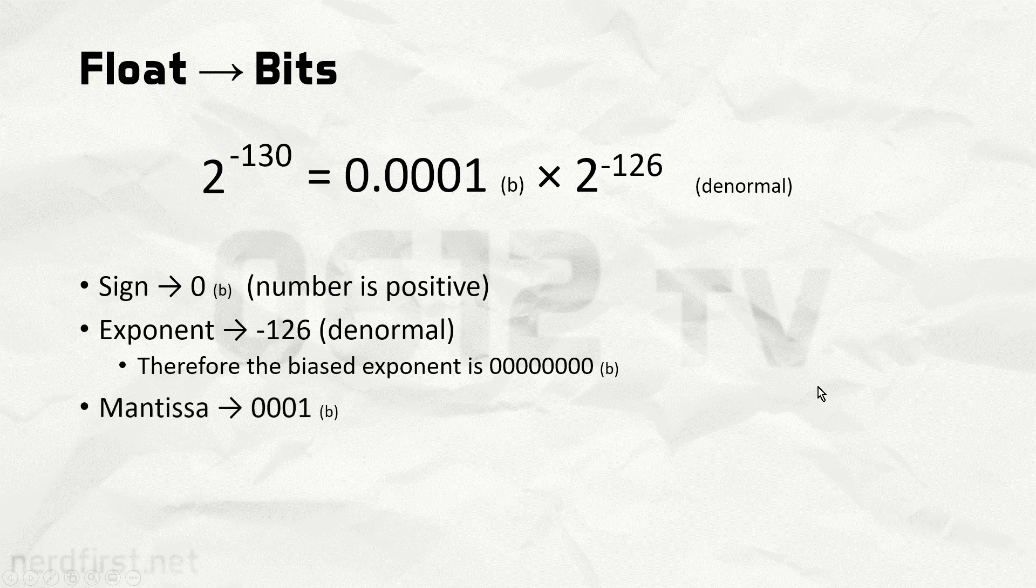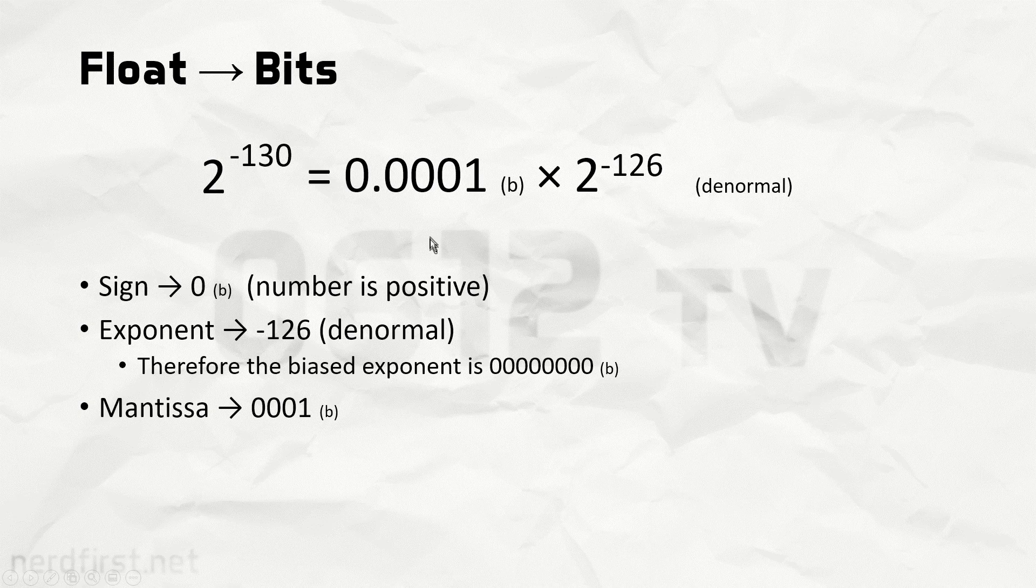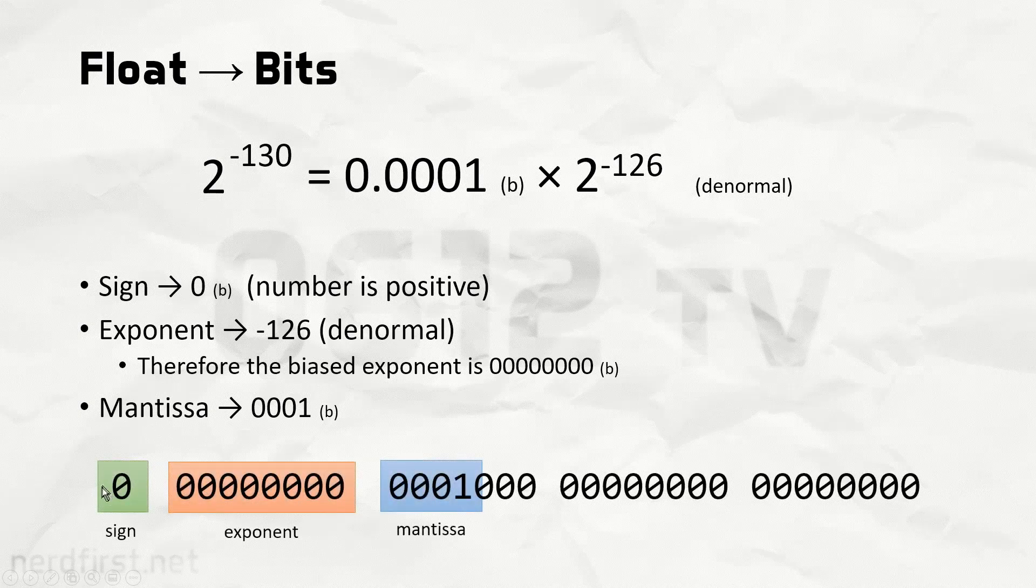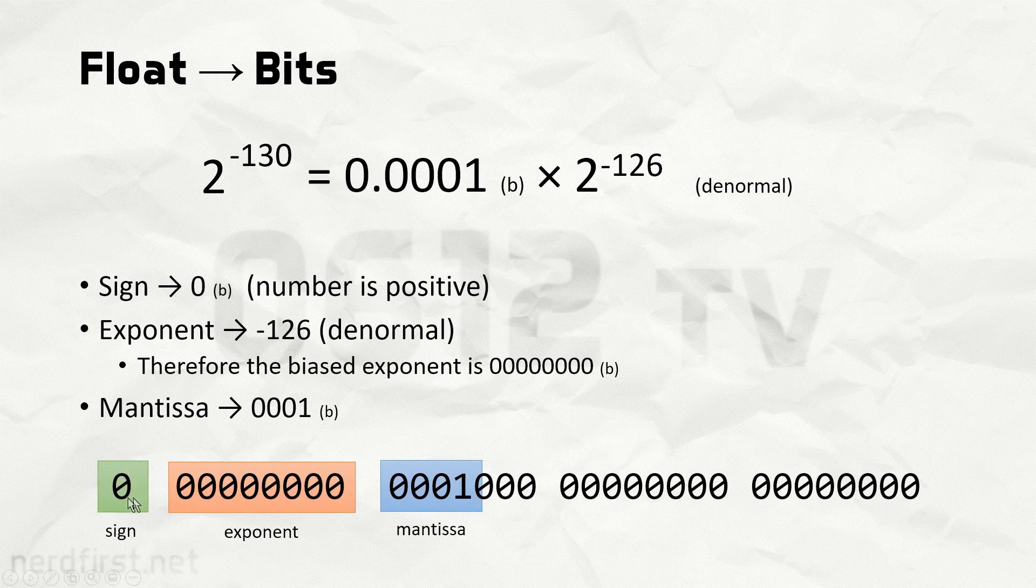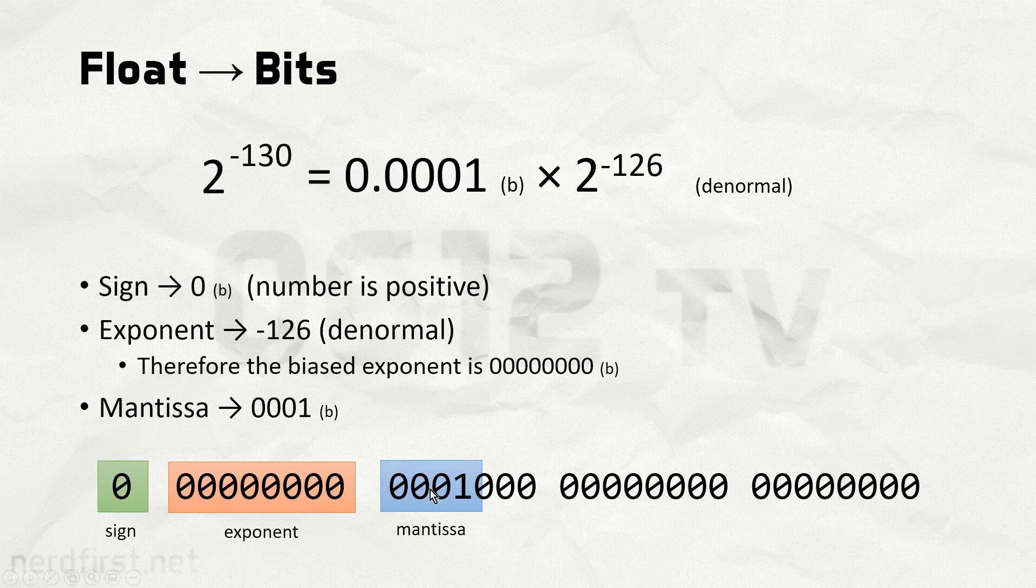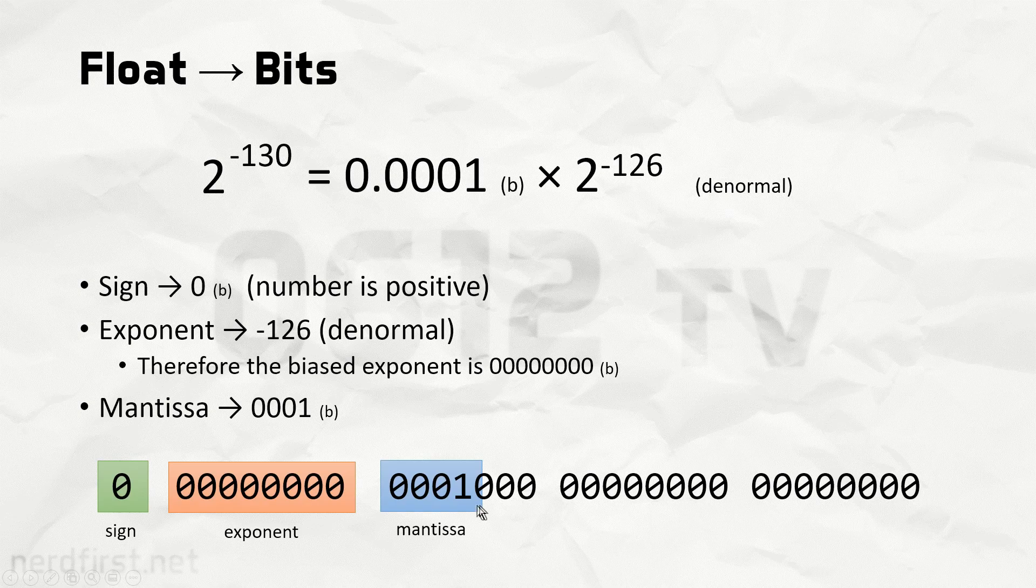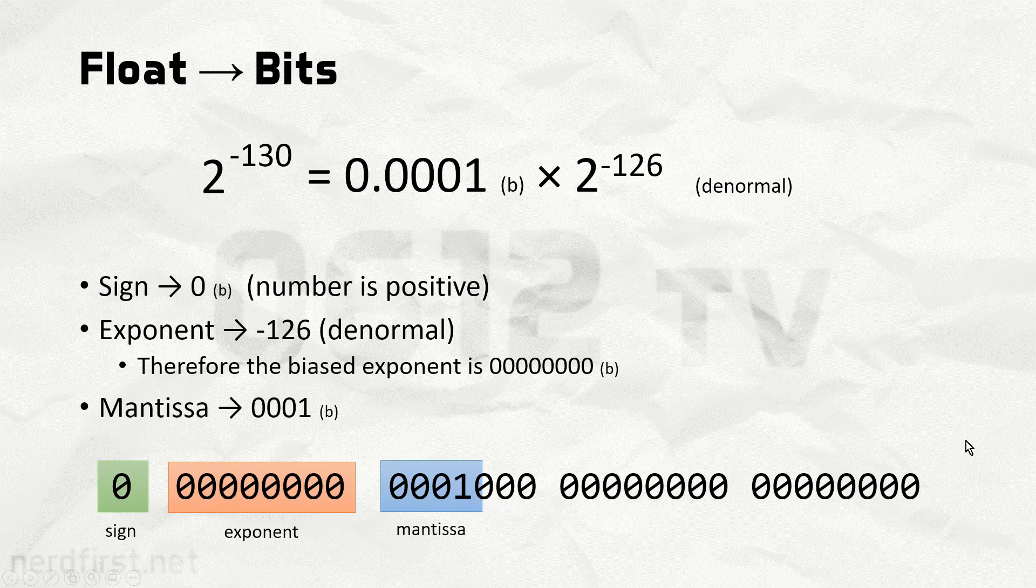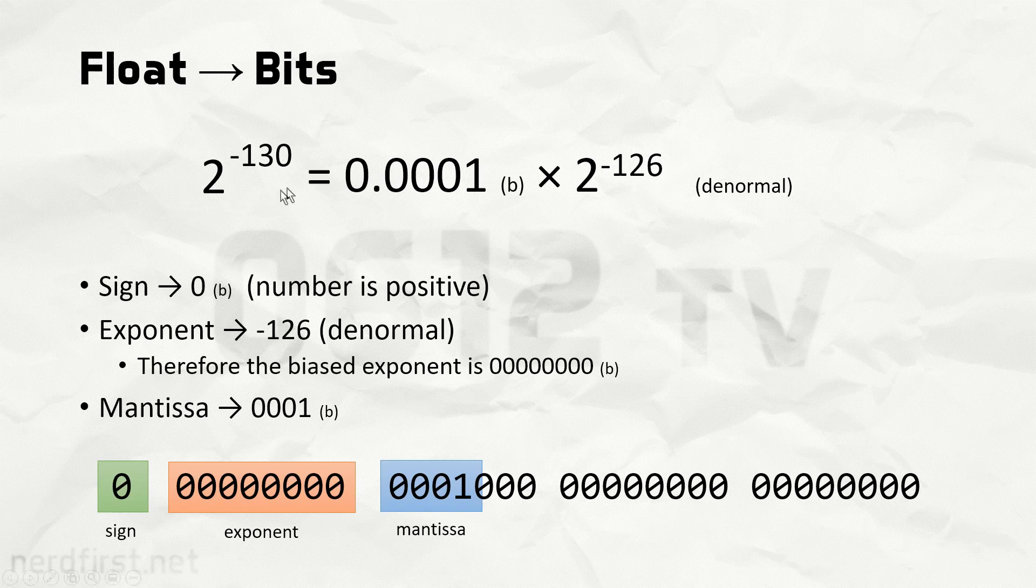All that's left then is to assemble our mantissa, which, as mentioned, is everything after the decimal point. This allows us to assemble everything together, our sign of 0, our exponent of all zeros, and our mantissa of 0001. Of course, we need to pad this out to a 32-bit number, so we just fill in all the zeros until we get 32 bits. And of course, this would be the exact same value as we put in just now to get our answer 2 to the power of negative 130.